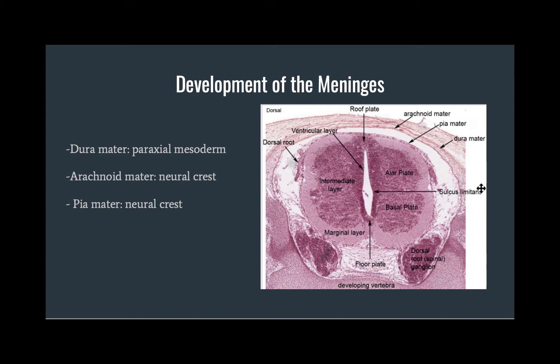Most externally is the dura mater, derived from paraxial mesoderm. Closely adhered to that is the arachnoid mater, derived from neural crests. Interior to that, along the surface of the spinal cord, is the pia mater — another neural crest derivative. Because both the pia and arachnoid mater are thinner tissues derived from the neural crests, they are grouped together as the leptomeninges, meaning thin tissues.